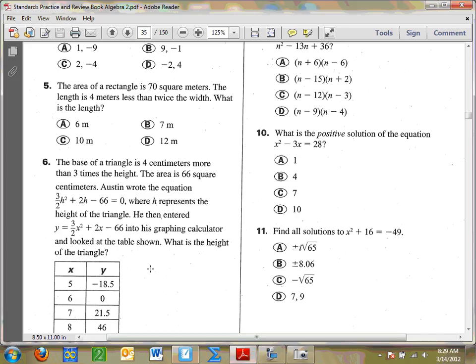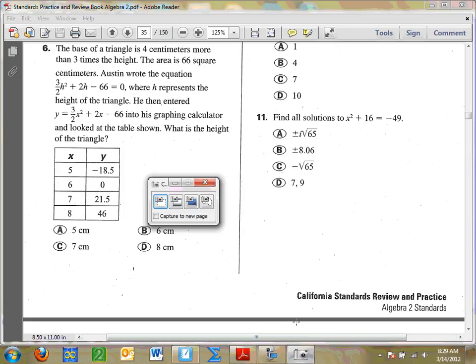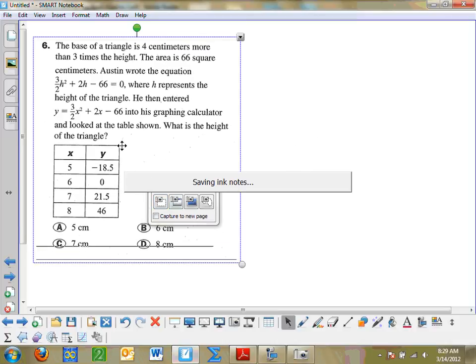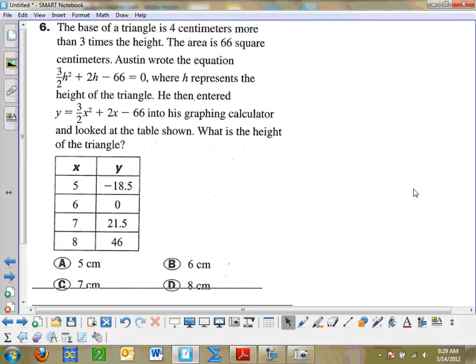Okay, move on to the next one there, number 6. Number 6 says the base of a triangle is four centimeters more than three times the height, and the area is 66 square centimeters, and Austin wrote the equation. So they already give you the equation, where H represents the height of the triangle. He then entered this into his graphing calculator and looked at the table below, so he got all the information. What is the height of the triangle?